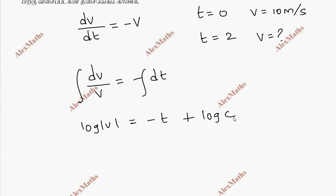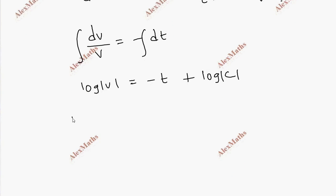Log modulus v is equal to minus t plus a constant log c. Putting the log terms on one side: log mod v minus log mod c equals minus t. Using log a minus log b equals log a by b, we combine the logarithms.